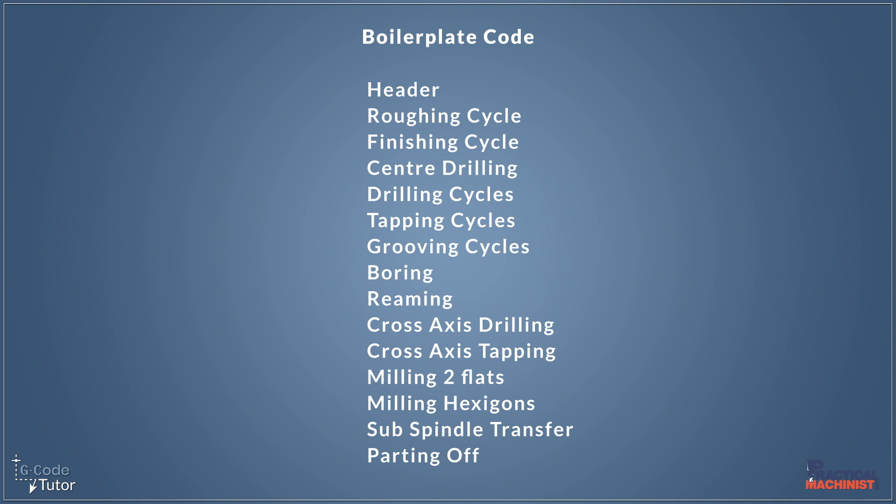By making a boilerplate program that includes all these features — for example, if we're making a job without a grooving cycle, we would just delete the grooving cycle section. We would have an outline of a program all ready to go, then just edit it to make our part. This also doubles up as quite a safe way of programming, because we know these sections and sequences work, so we can be more confident that we haven't got any mistakes in our program since the majority of it we've used before and we know it's correct.